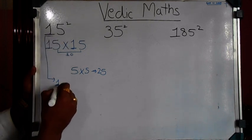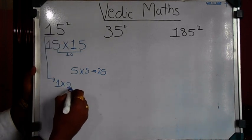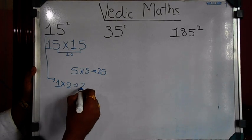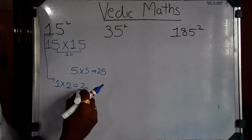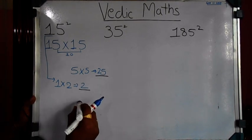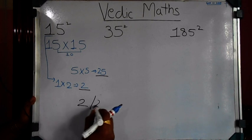This 1 you have to multiply by the number next to it, which is 2. Therefore, your answer will be 2 and 25, giving 225.